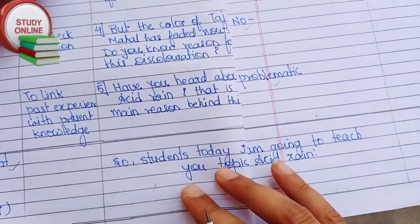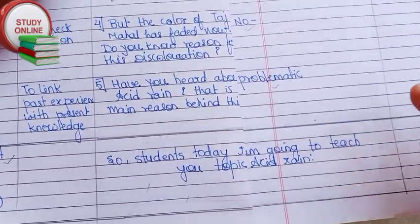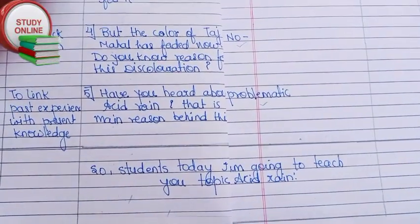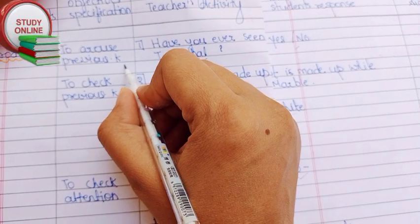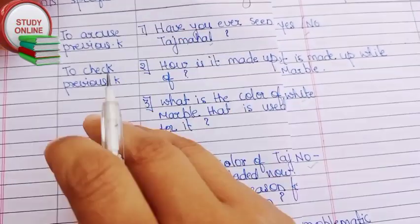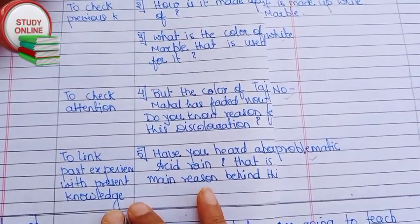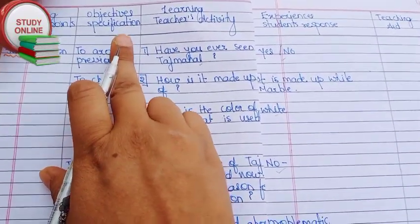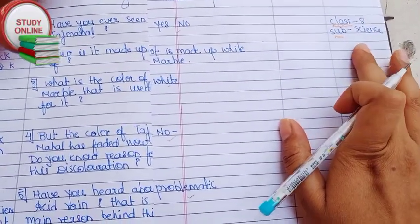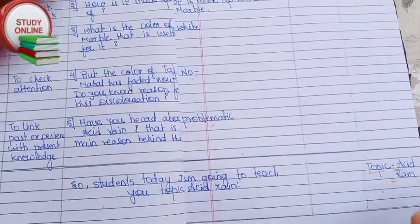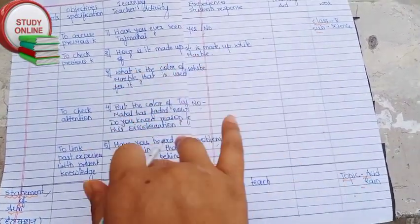After that we have to announce our topic — that is called the statement of aim. We give our statement of aim like: students, today I'm going to teach you the topic acid rain. The objectives here are to check previous knowledge, to check attention, and to link past experience with present knowledge. Here are the class, subject (science), and topic details — this is the overall look.